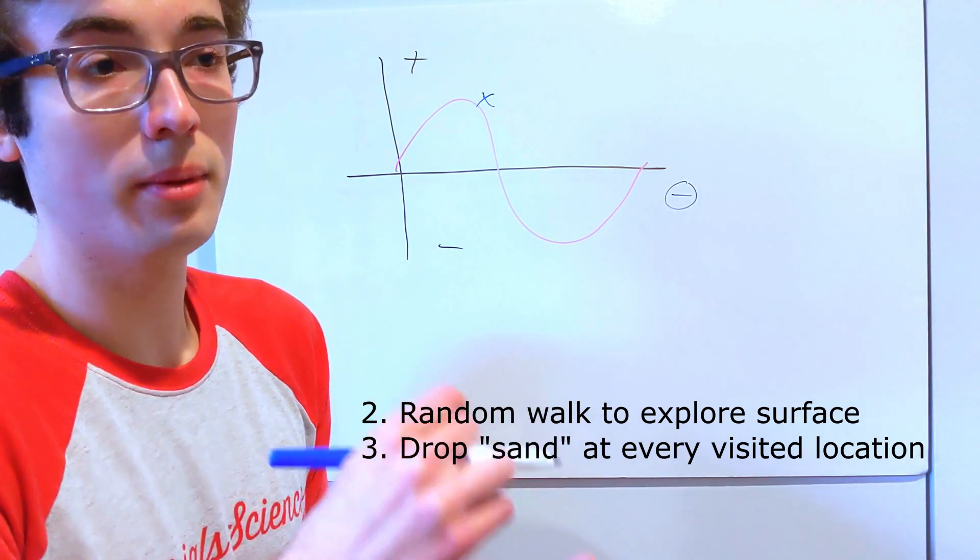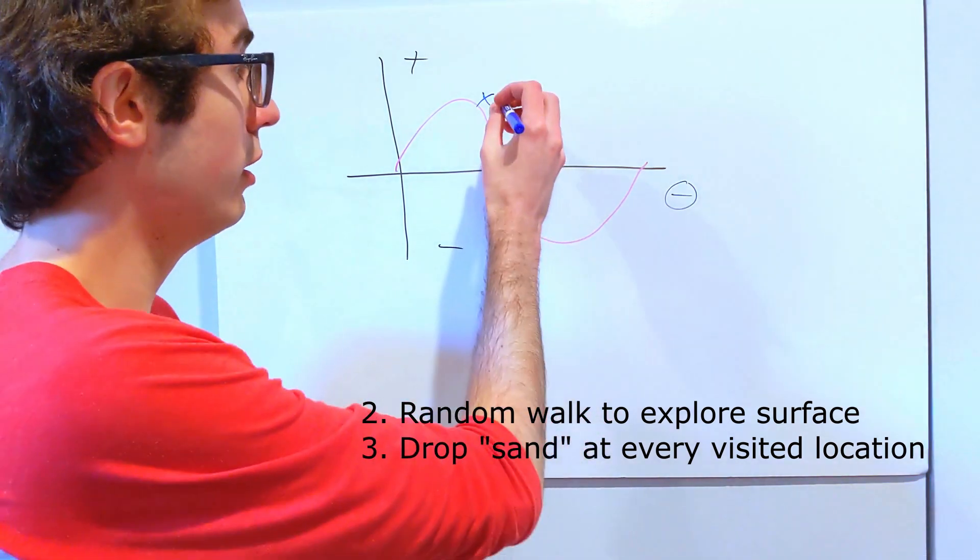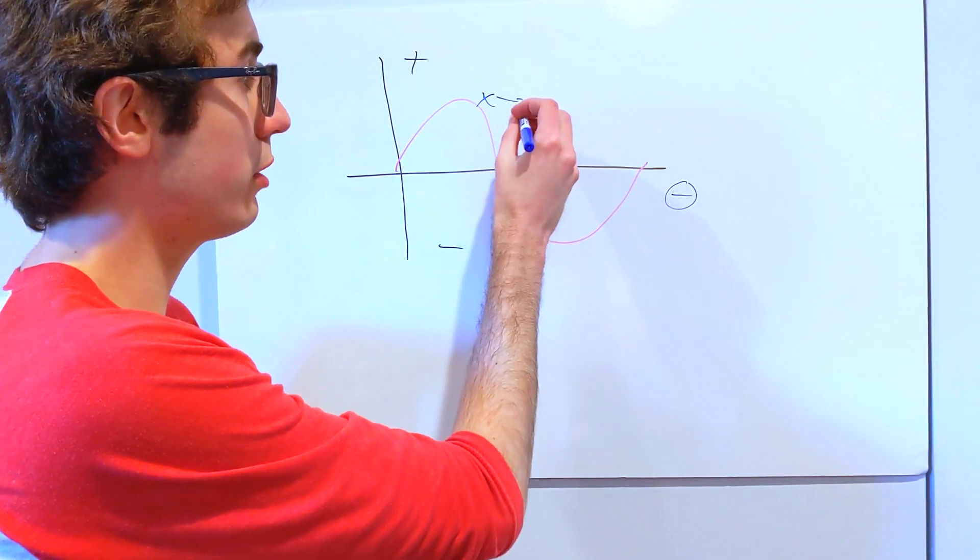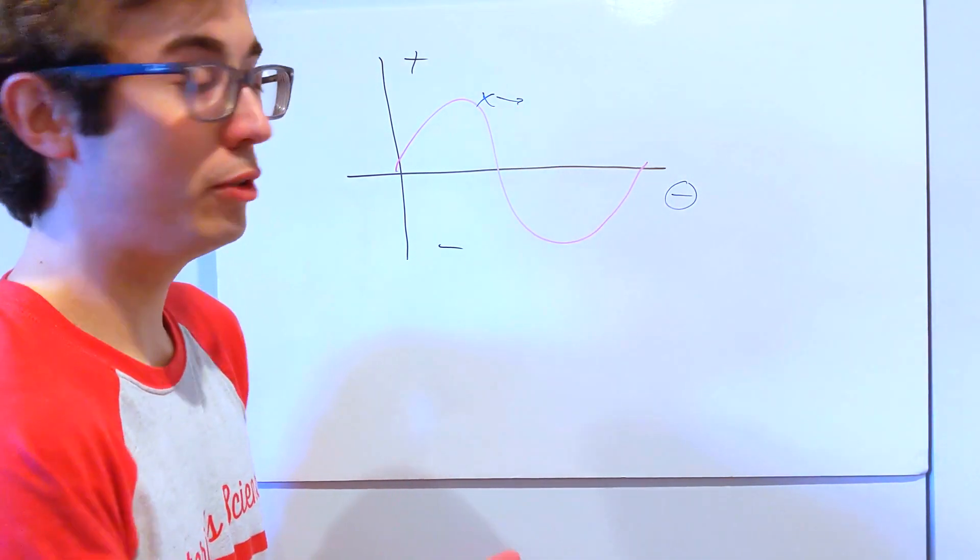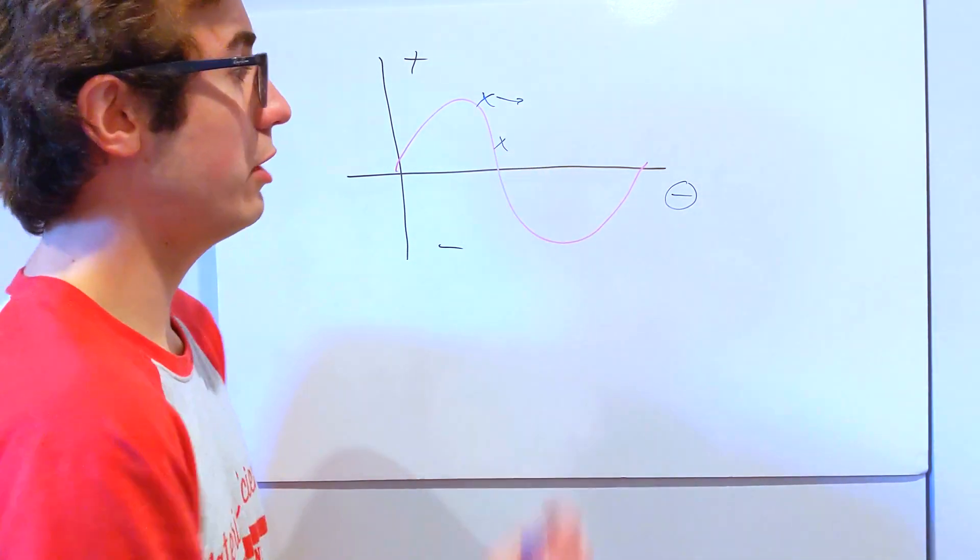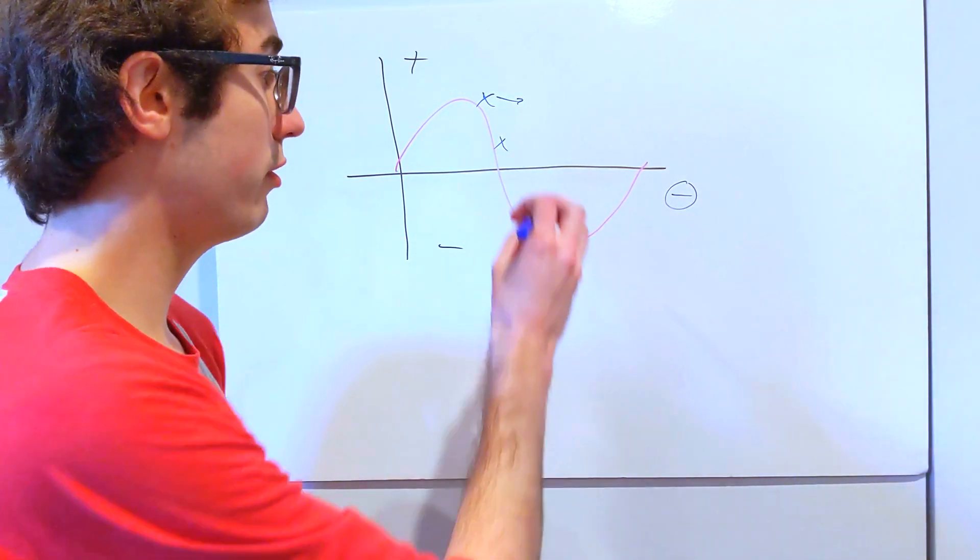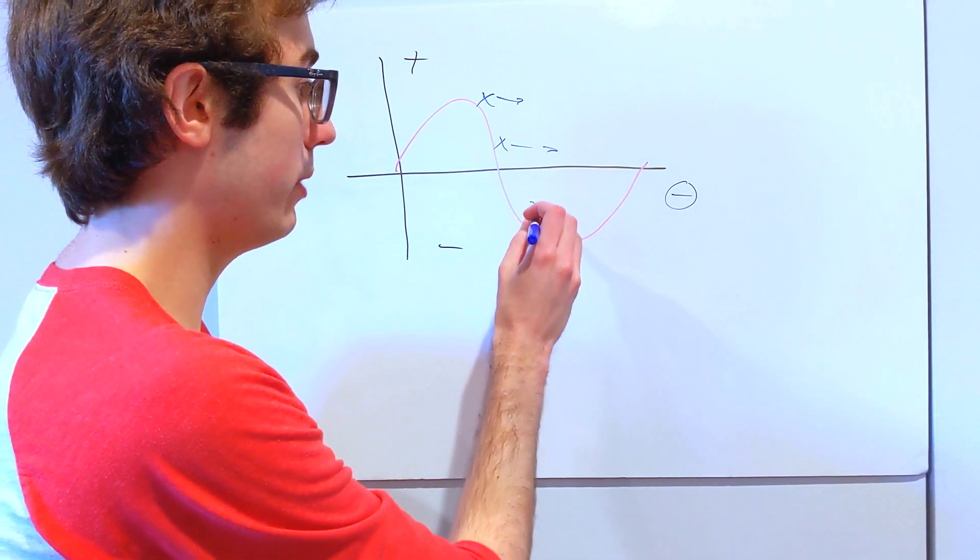In my case, I actually modeled the little sand packets as spheres. So from here, the ant might choose to go this way, and then at this new location, the ant will solve for energy here, and drop another parcel of sand, and keep going and keep doing that random walk.